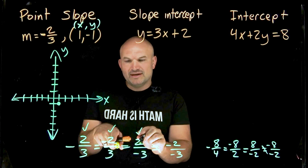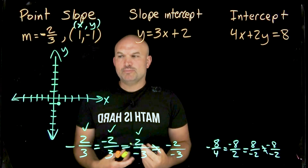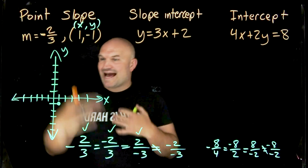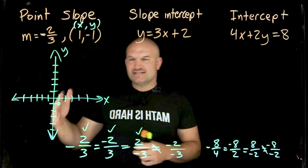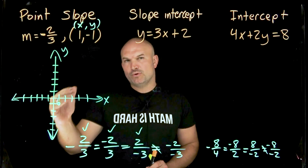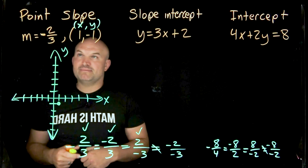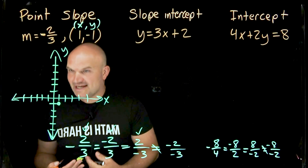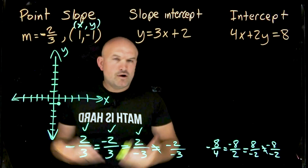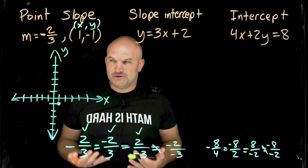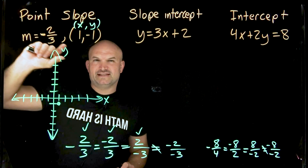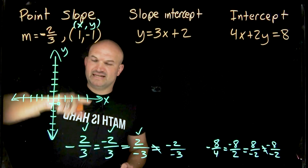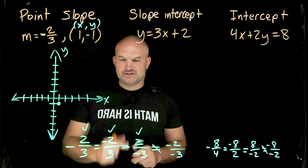Slope is the relationship between any two points on our coordinate grid — it tells you how to navigate from one point to the next. Many students remember this as rise over run, or the change in y over the change in x. However your instructor phrases it, I like to use the change in y coordinates over the change in x coordinates.